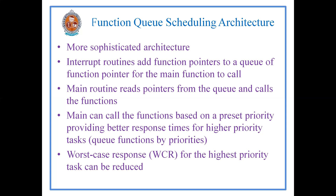That is the main concept introduced in function queue scheduling architecture — a queue of pointers is maintained. For each interrupt, a function pointer is added to the queue. The main routine reads the pointers from the queue and calls the corresponding functions. Main can call the functions based on a preset priority, providing better response times for higher priority tasks.